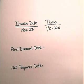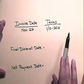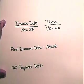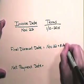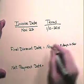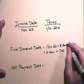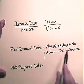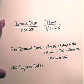Now let's demonstrate extra dating. Extra dating gives the buyer extra time to take advantage of the cash discount. If the invoice is dated November 22nd and the terms are 1/10 with 20 extra days, then the discount date is November 22nd plus 10 days plus 20 extra days. Counting 8 days remaining in November plus 2 days in December plus 20 extra days gives us December 22nd as the final discount date.